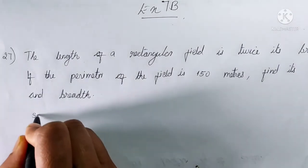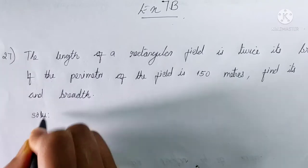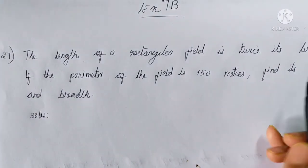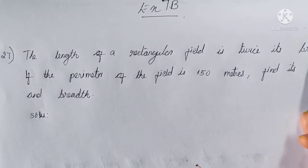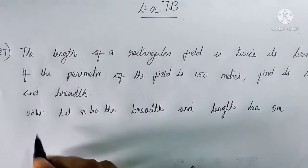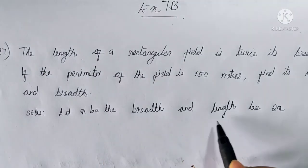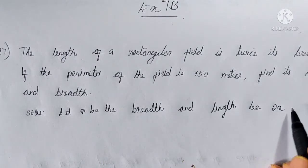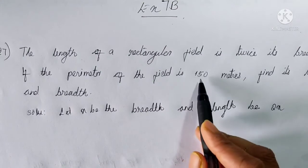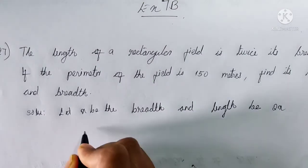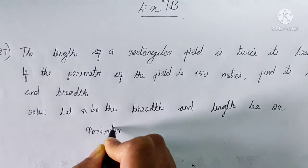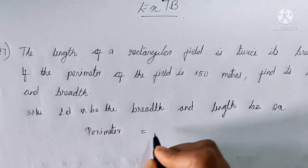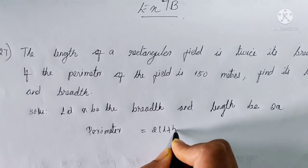Very easy question. The relation between length and breadth is given — length is twice its breadth. So we can take the breadth of the rectangle as X. Let X be the breadth and the length be 2X. If the perimeter of the field is 150, perimeter is equal to 2 into (L plus B).